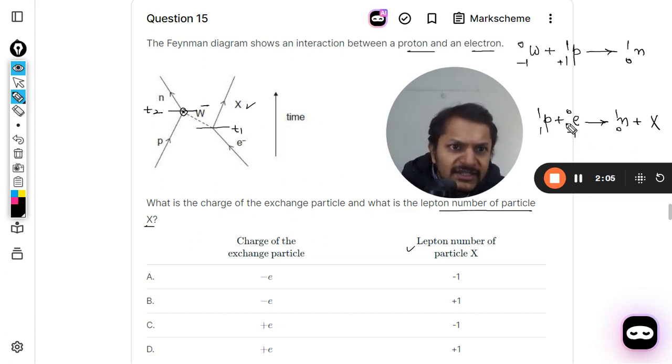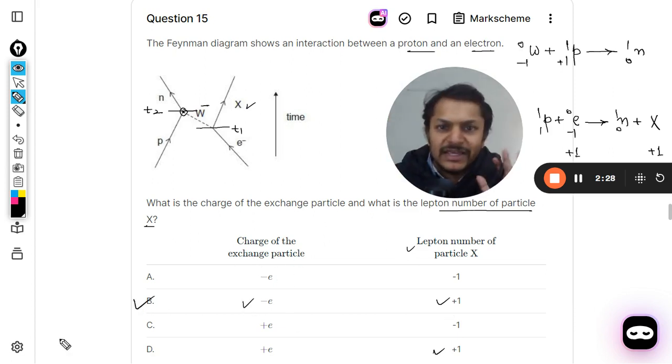The lepton number here is plus one for the electron, and so even here it has to be plus one. So the lepton number will be plus one. We just want to tell the lepton number. We are not interested in which kind of neutrino is this. We are not concerned with that. And the charge on this particle is negative, so our answer will be B.